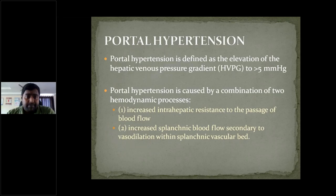Portal hypertension is defined as elevation of the hepatic venous pressure gradient greater than 5 mmHg. The normal pressure in the portal system is usually 10 to 12 mmHg. If the hepatic venous pressure gradient is more than 5 mmHg, it is known as portal hypertension.